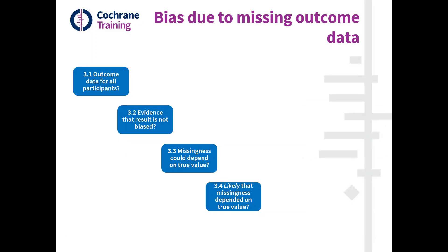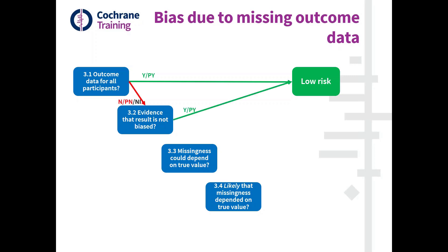We've turned these four questions into an algorithm, which is straightforward. We get to low risk of bias either because we had no missing data or we had outcome data for all participants. If not, we're also at low risk of bias if there's evidence that it was not biased. And if there's no evidence, then we look at whether missingness could depend on its true value. If it could not — for example, the example of the fire, or the random sample, or other reasons clearly unrelated to the true outcomes that would have been measured — that would be a low risk of bias.